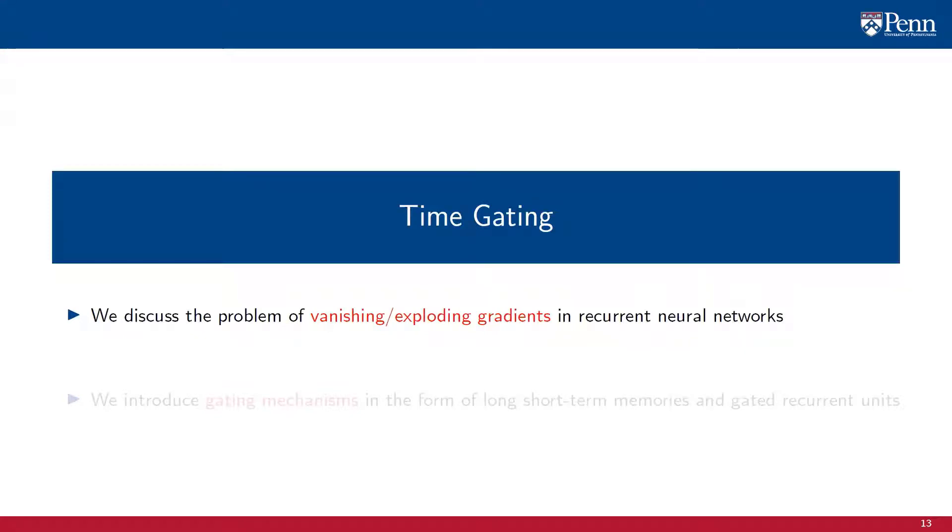Recurrent neural networks are trained via backpropagation through time, but propagating the gradients over many states as necessary to train recurrent neural networks can lead to vanishing or exploding gradients. Gated recurrent neural networks address that issue by introducing gating mechanisms that create paths through time over which gradients do not vanish, neither explode. Here in particular, we will look into gating mechanisms in the form of long-short-term memory units and gated recurrent units.